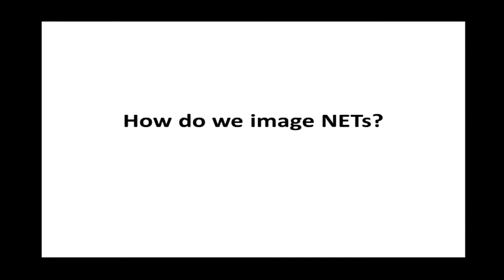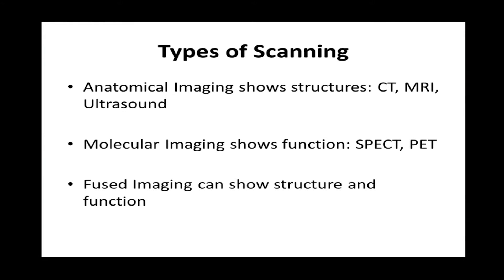There are different types of imaging available. There is anatomical imaging, which shows us the structure of the tumor, the size, and where it sits anatomically. Scans used for this purpose are CAT scans, also known as CT, which work with x-rays; MRIs, which work with magnetic fields; and ultrasound, which works with sound waves.